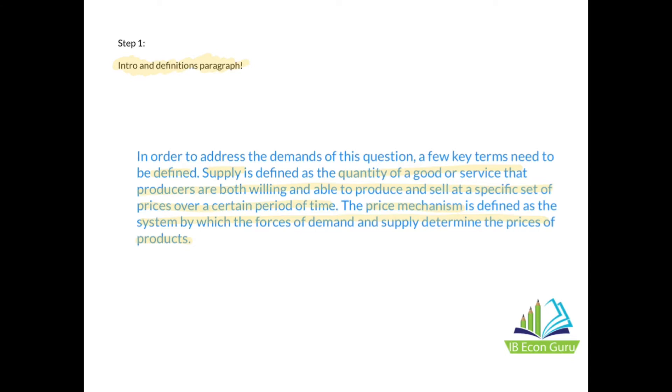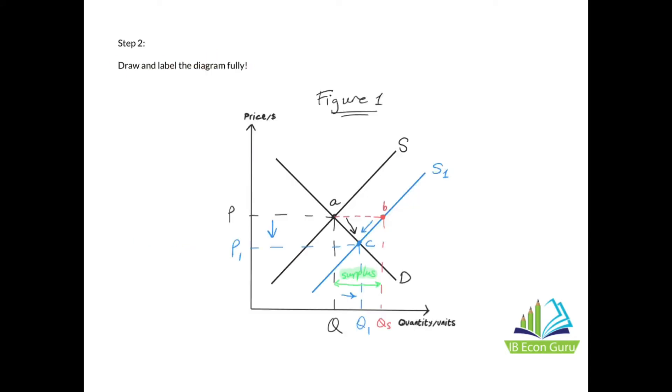Step 2 is to draw and label the diagram fully. Some teachers advise students to explain the theory first, then draw the diagram, but I prefer to put the diagram right after the definitions so you can weave your explanation of the theory and the diagram together. Obviously label the diagram—I labeled it Figure 1. I have S and S1 because the question mentions there's been an increase in supply. I've also labeled different points like point A, point B, and point C, as well as P1, P, Q1, Q, and QS. All of these labels will help me explain the diagram in the next part of the essay.